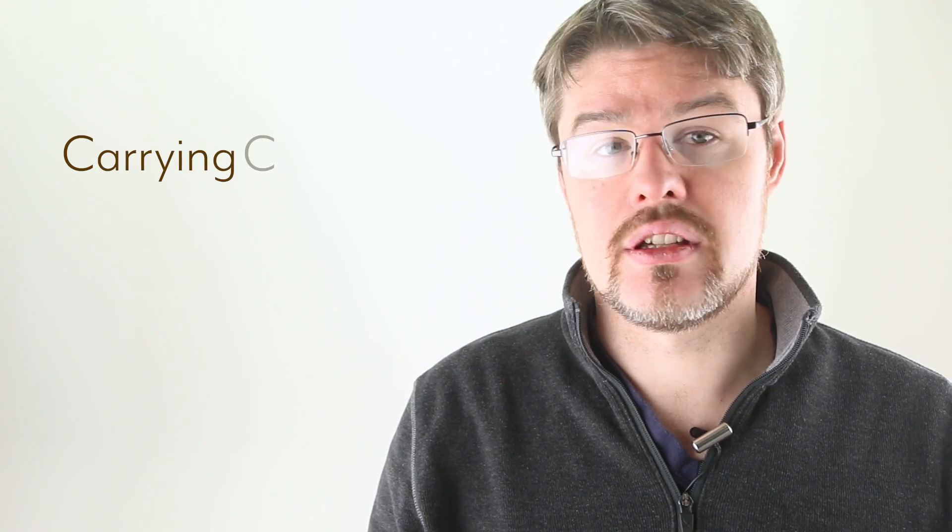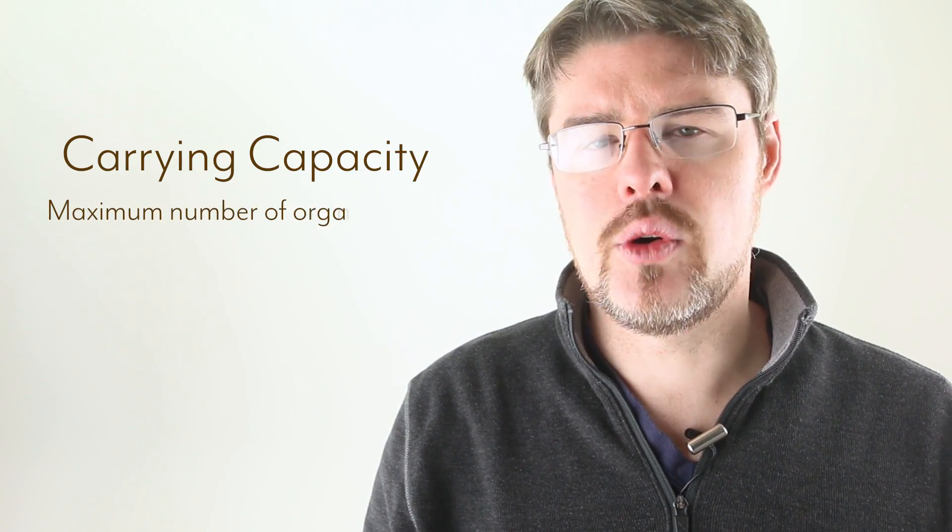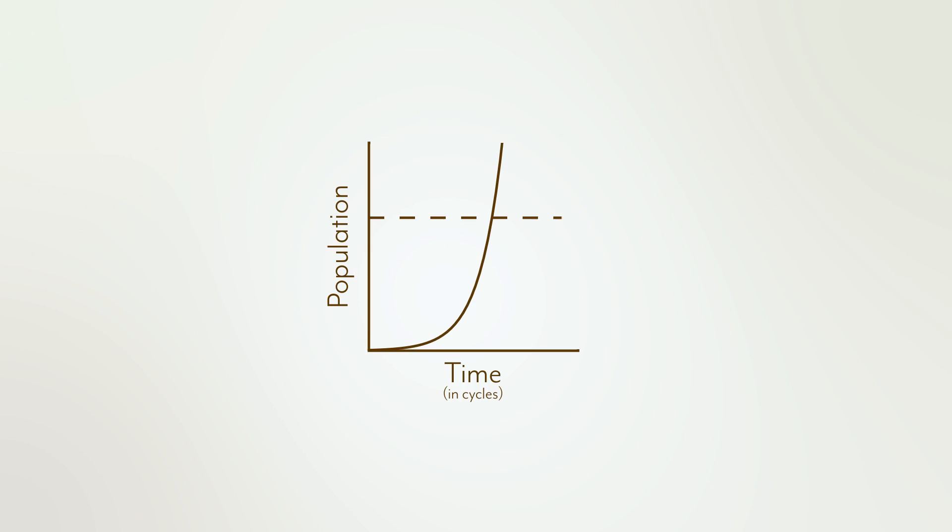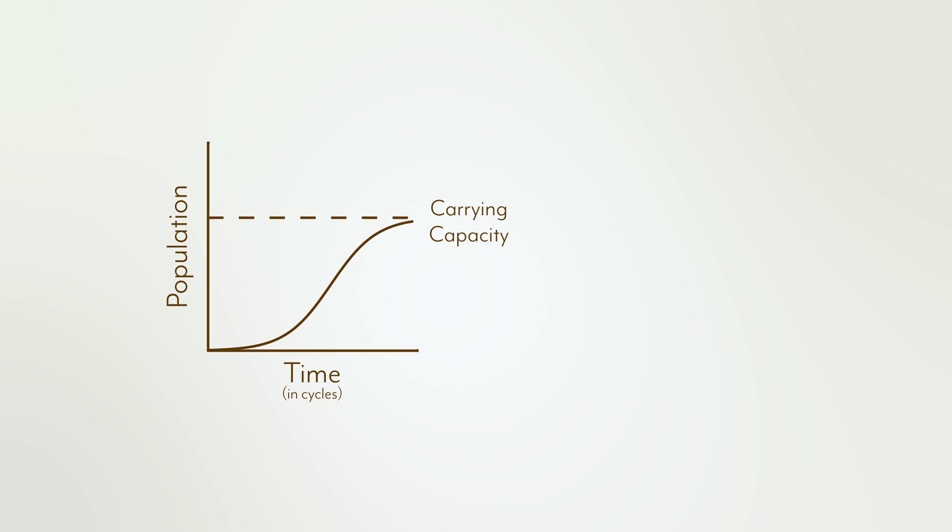In a single number, an environment has what's called a carrying capacity, the maximum number of organisms it can support for a given population. We can show this on the graph here. It's a horizontal line, because this will be true for all times we're considering. A few things can happen when the population gets to this point. One, the population can slowly approach the carrying capacity, but never quite reach it. We say that the model approaches this value asymptotically, and that the carrying capacity represents an asymptote. That is, a value that it approaches, but never quite reaches.